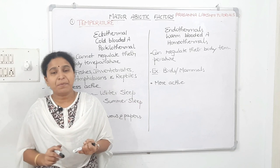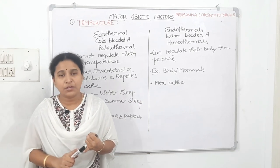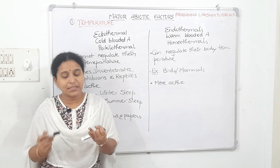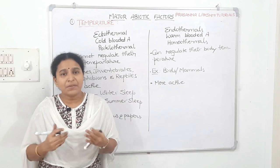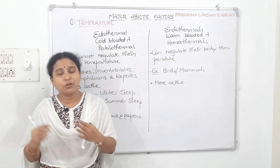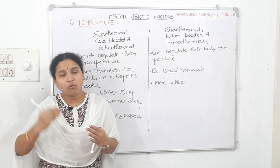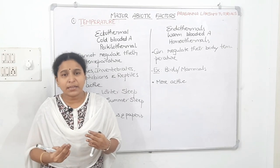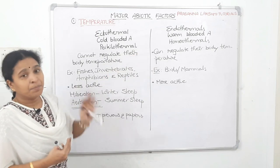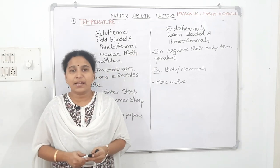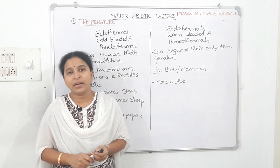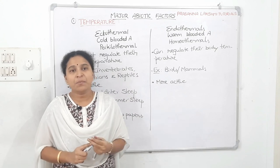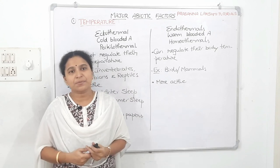To summarize the temperature topic: temperature is the most ecologically relevant abiotic factor; it affects enzyme kinetics and BMR, thus impacting enzymatic activity. We classified organisms zone-wise into megathermals, mesothermals, microthermals, and hecothermals, and broadly into eurythermals and stenothermals. We also covered five rules related to temperature and the ectotherm-endotherm classification. In the next class we will cover water and light as abiotic factors.